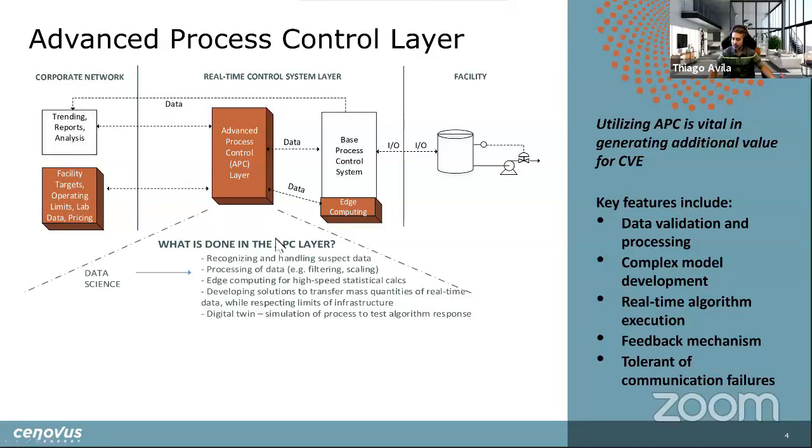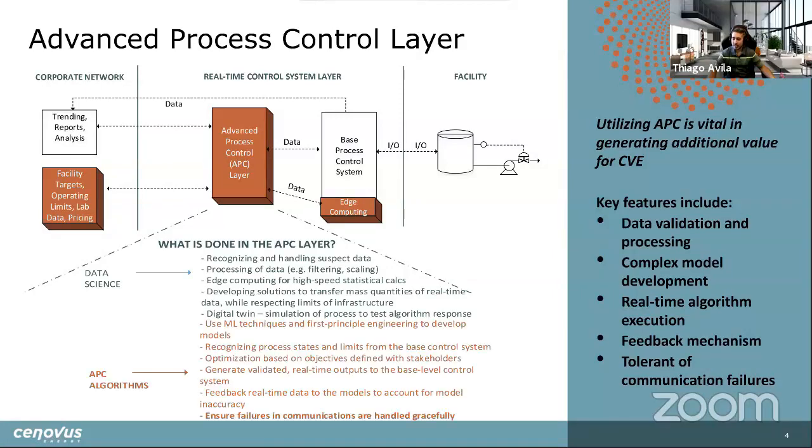So you can do a couple different things on your APC layer. First, there's a lot of analytics that goes on. You have to recognize and handle suspect data, figure out when your data set's incomplete. You're also doing a lot of prediction and simulation in the APC layer. And that all feeds into the actual APC algorithms, which use machine learning techniques to develop these first principles models, as well as simple transformation models. The one thing that because this is actually industrial software, it ensures that failures in communication or equipment hardware failures are handled gracefully and that your plant keeps on running or at least islands itself while the system's down.